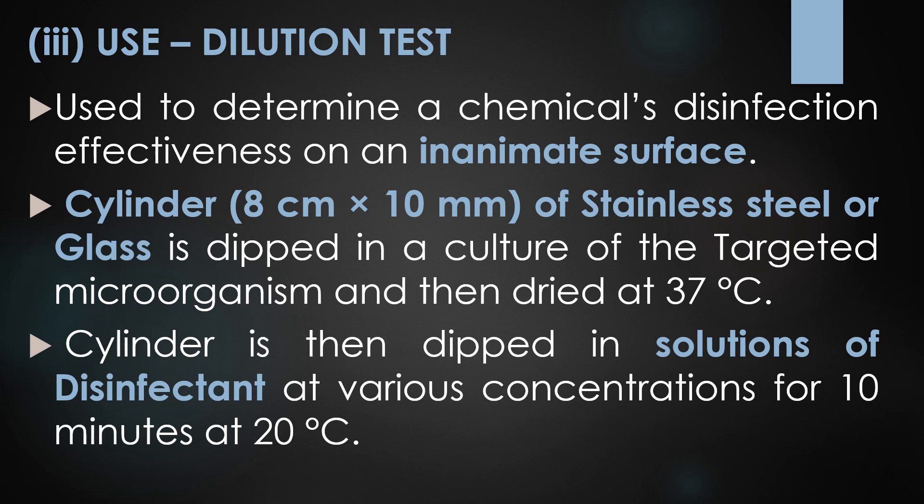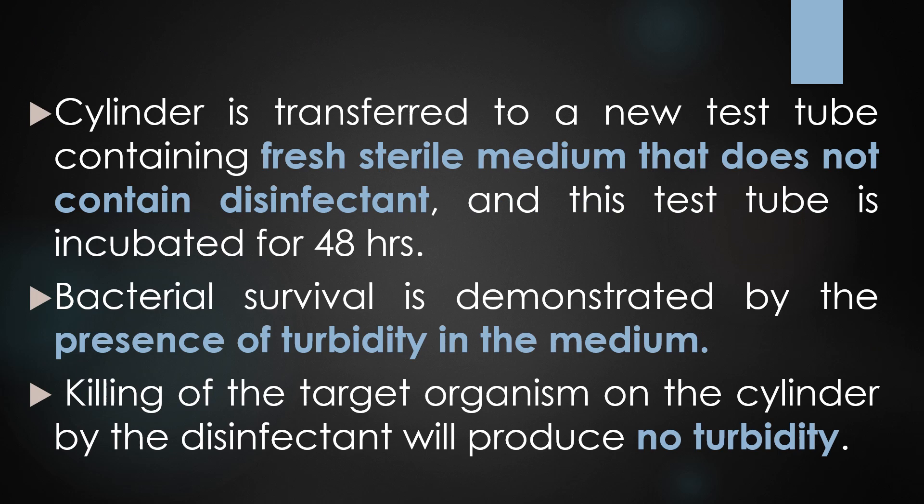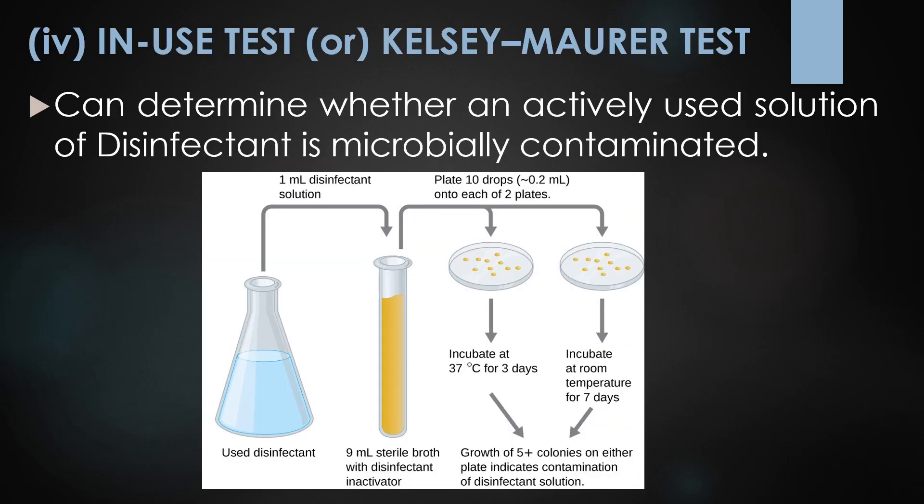The third method is the use dilution test, commonly used to determine a chemical's disinfection effectiveness on inanimate surfaces. A cylinder of stainless steel or glass is dipped in a culture of the target microorganism and dried at 37°C. The cylinder is then dipped in a disinfectant solution at various concentrations for 10 minutes at 20°C. Finally, the cylinder is transferred to a fresh sterile medium without disinfectant and incubated for 48 hours. Turbidity indicates bacterial survival; no turbidity indicates effective killing.